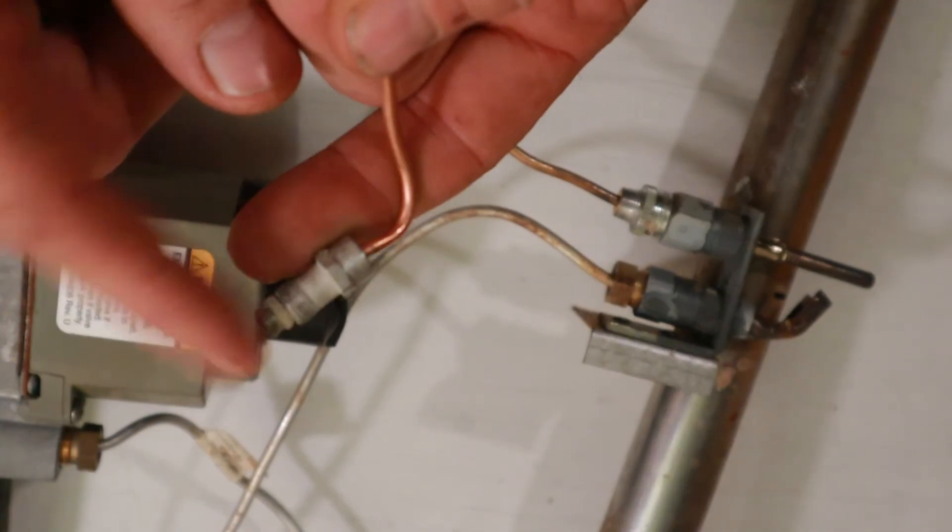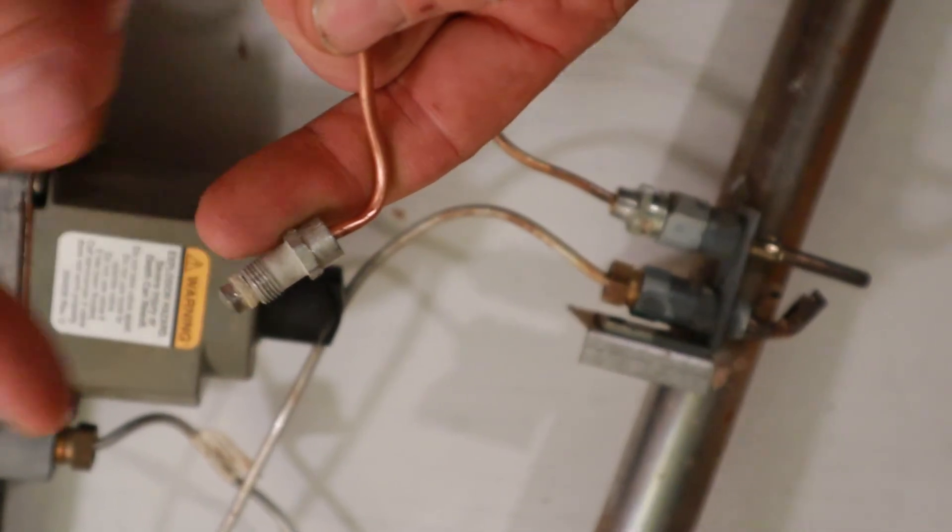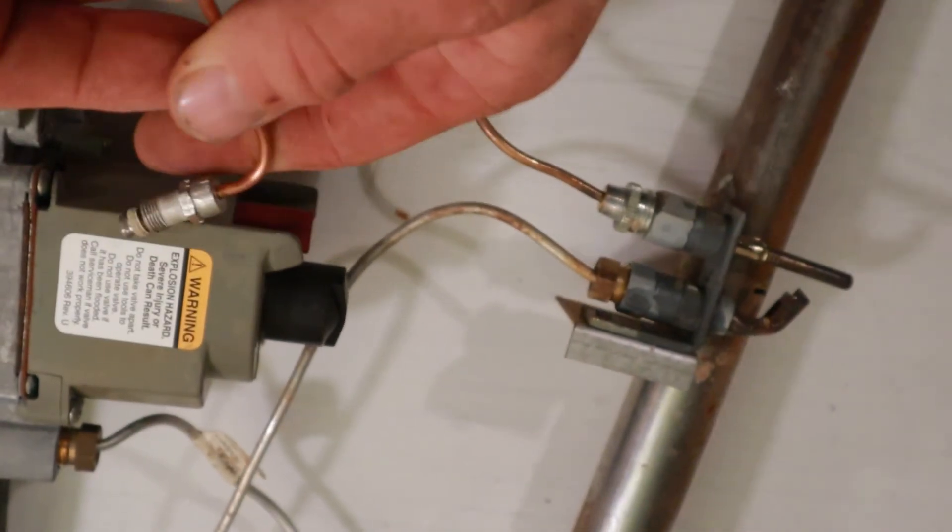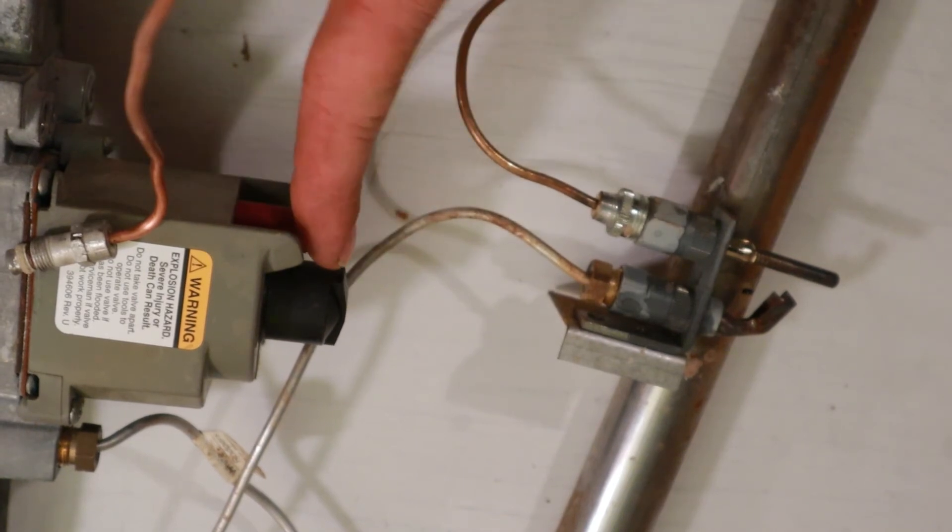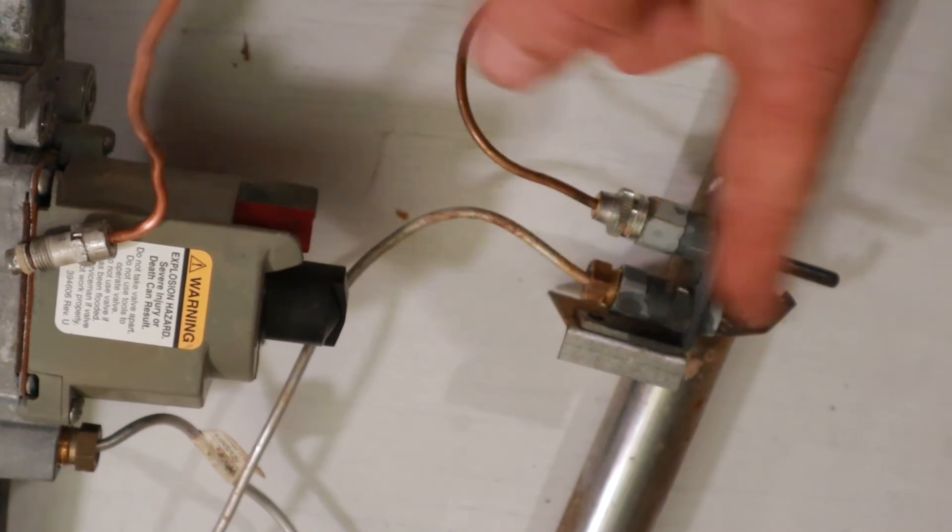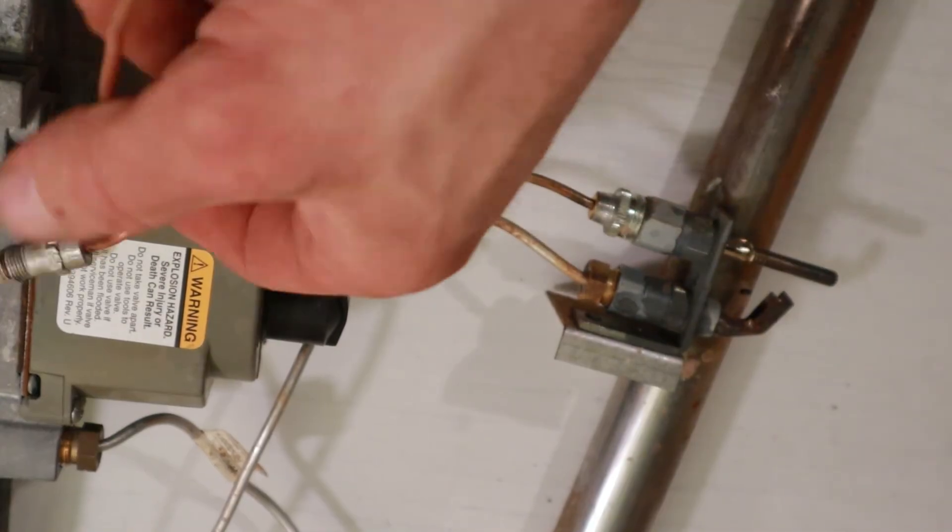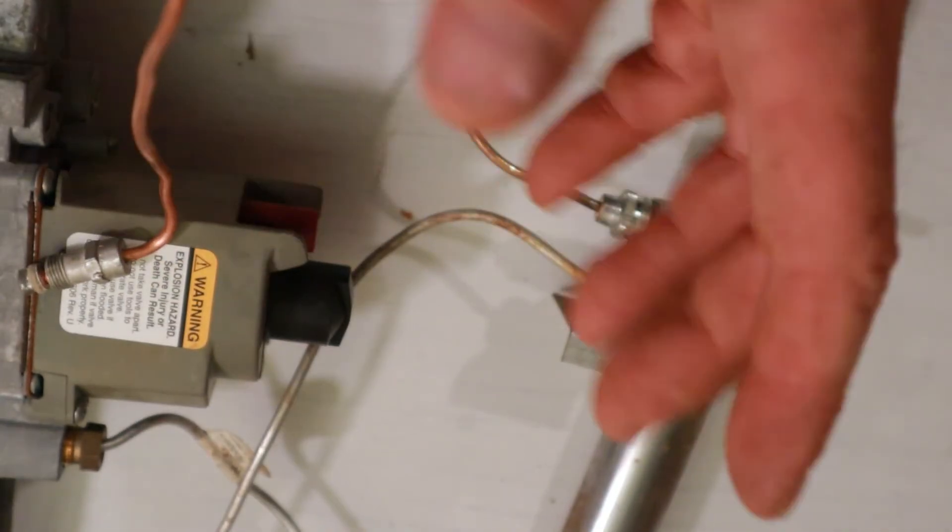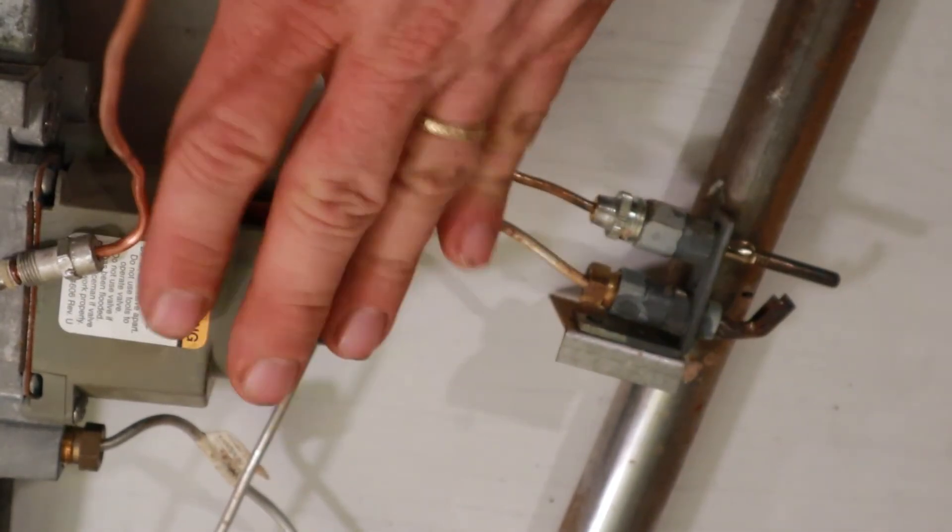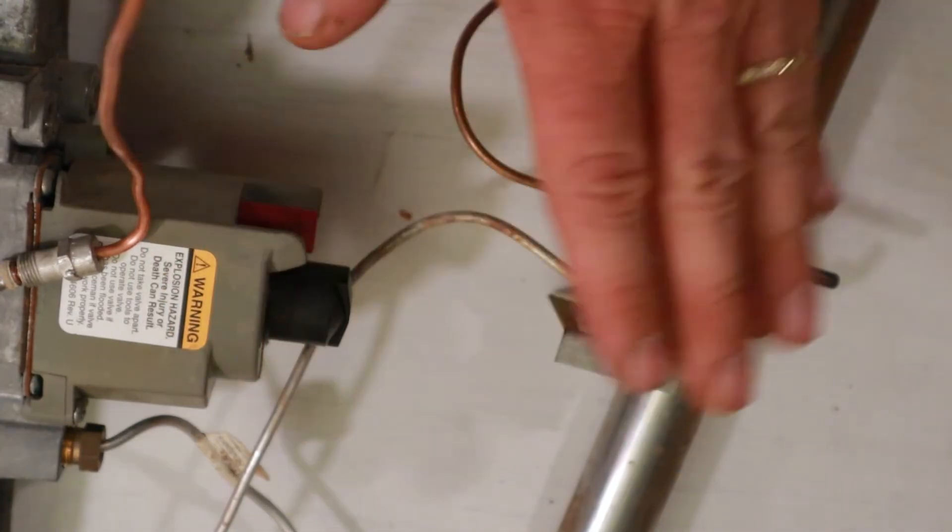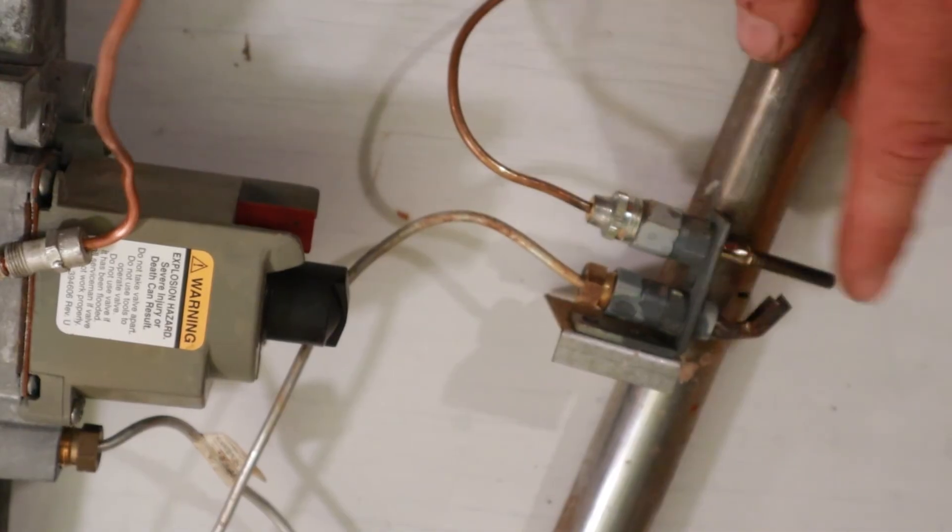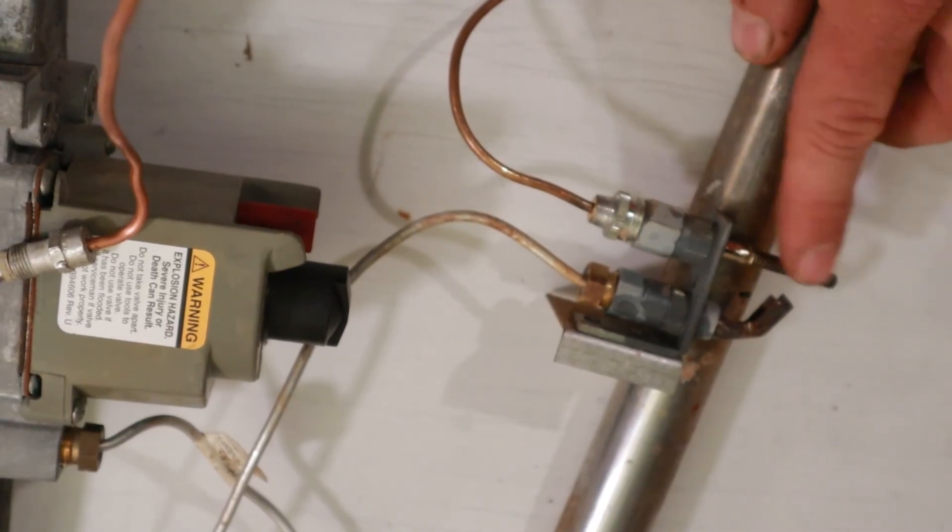You connect your other probe to a ground source. And you would actually have to put this on pilot, hold the pilot button down, and light the flame. And you have to keep the flame lit until you start getting a reading on this in millivolts. Now you're looking for at least 25 or 30 millivolts for a valve to actually operate. If you have a good thermocouple, it'll probably be higher than that. But if you're not getting that, then either the thermocouple needs to be cleaned, which is something you can actually try first or it needs to be replaced.